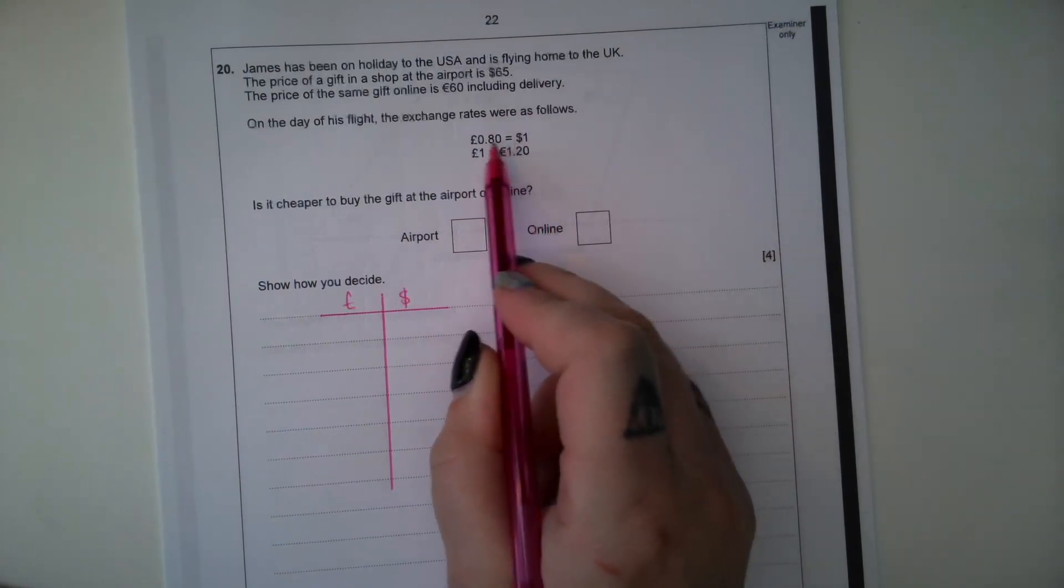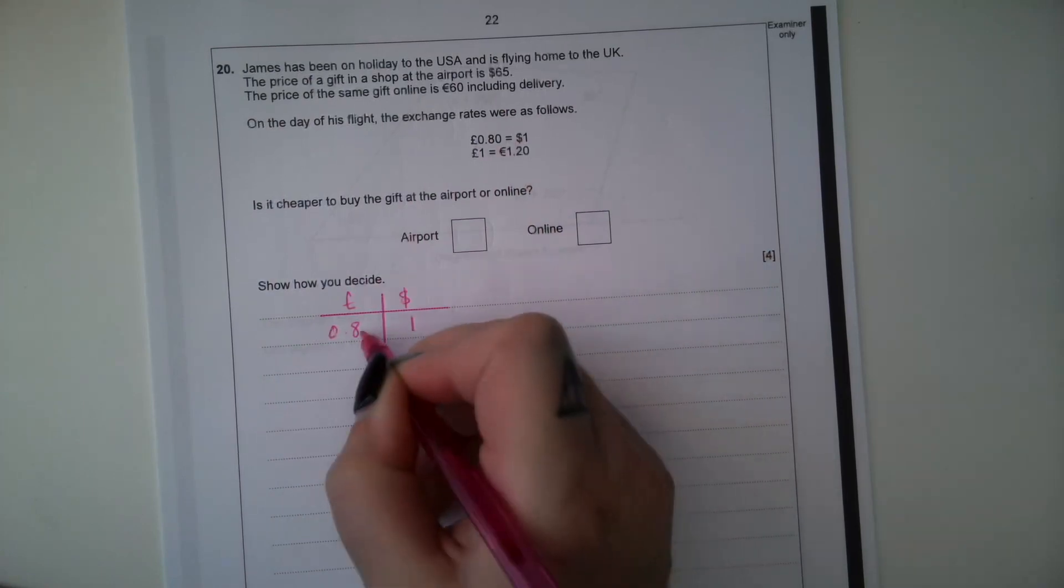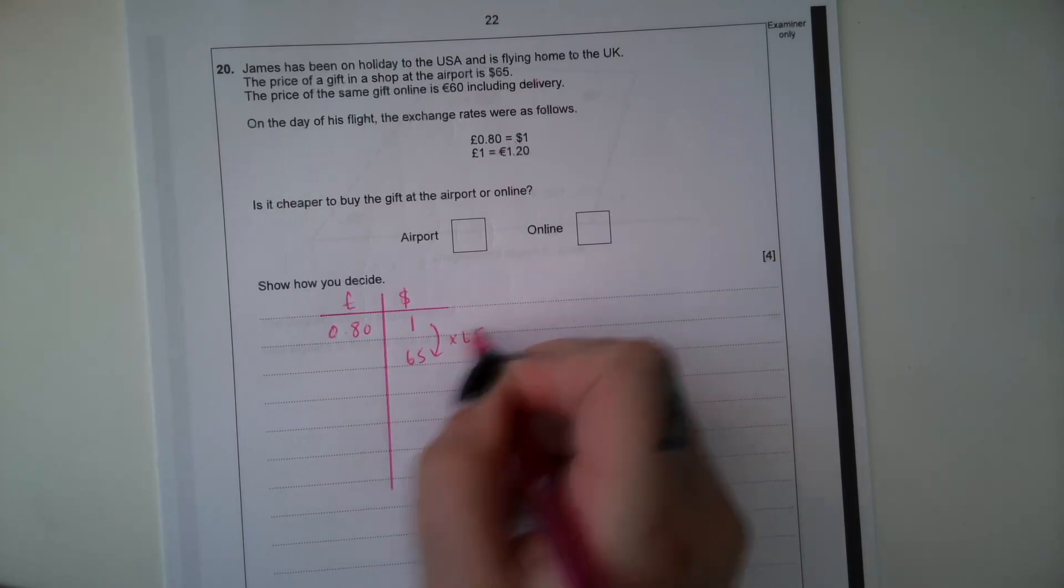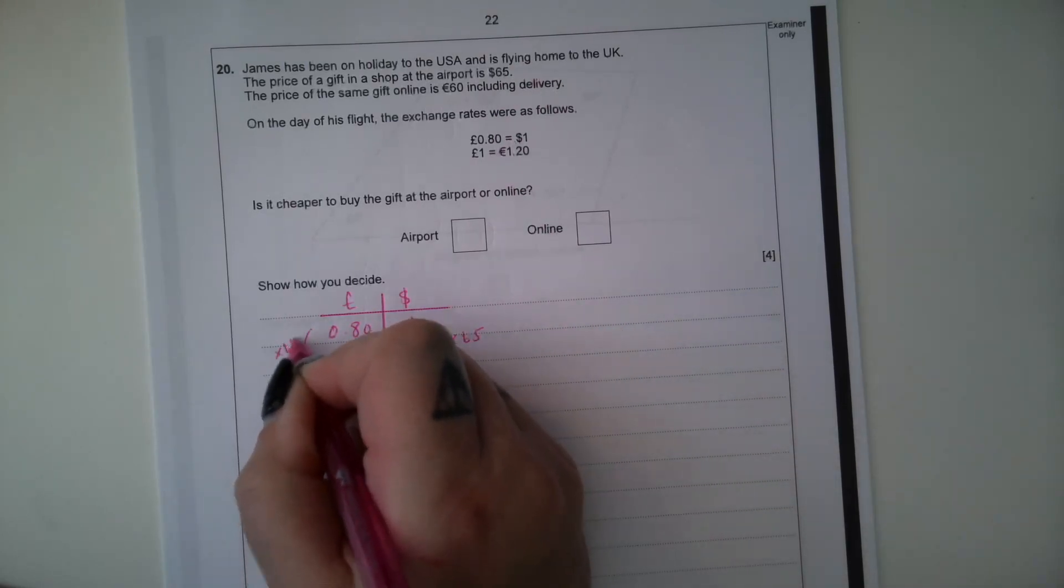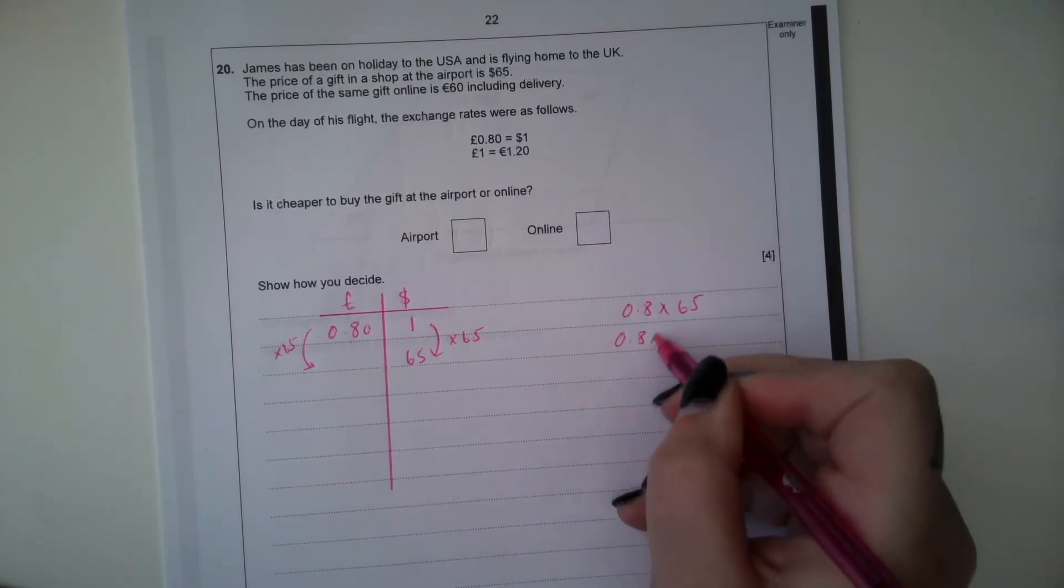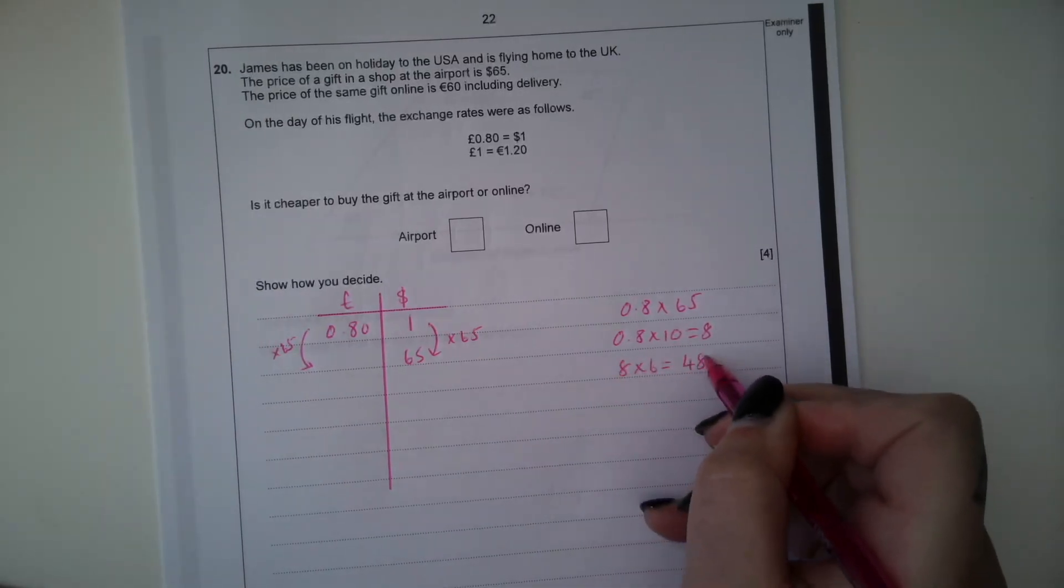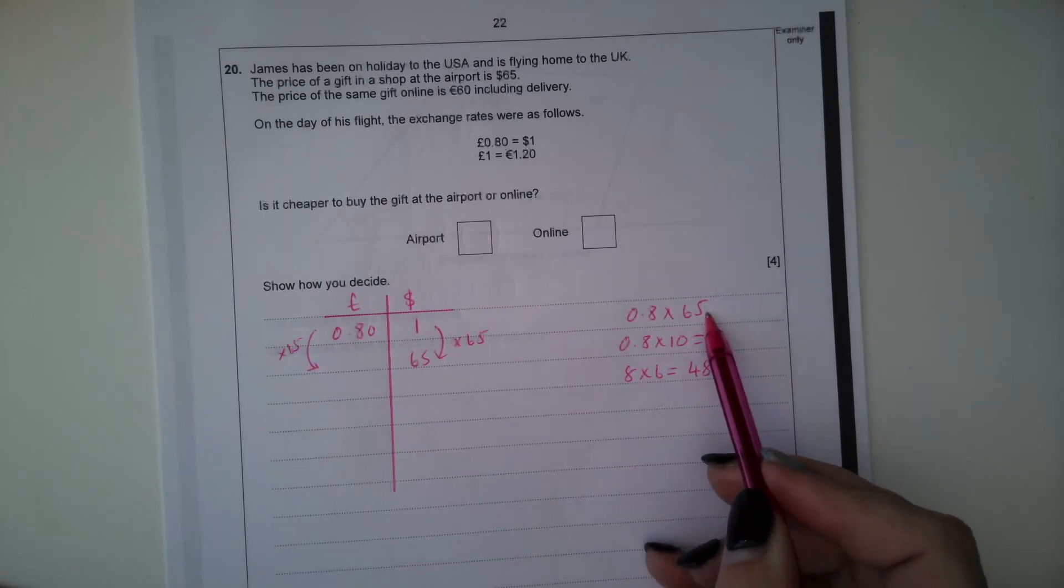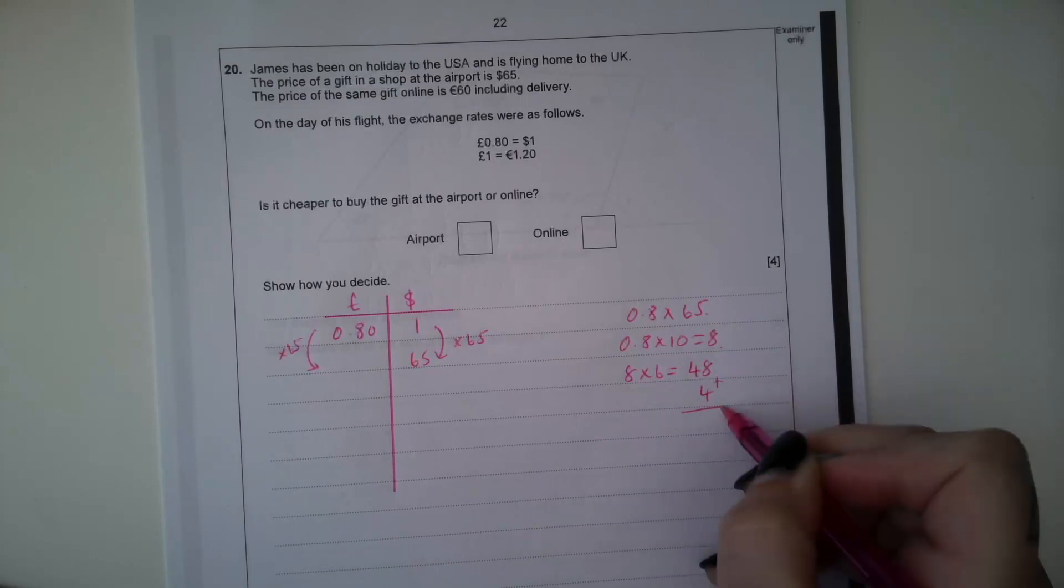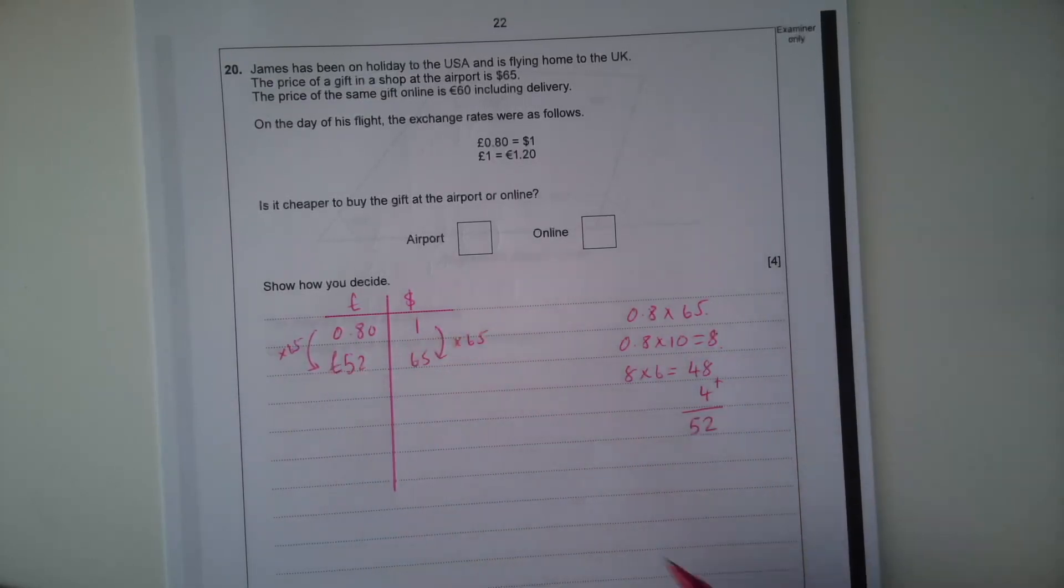So pounds, dollars, so £0.8 is $1. We've got $65. So we would times by 65. So 0.8 times 65, well 0.8 times 10 is 8. So 8 times 6 is 48 and then we need the 5, which is going to be half of this. 0.8 times 5 is 4. So we are going to add the 4, which gets us to £52.